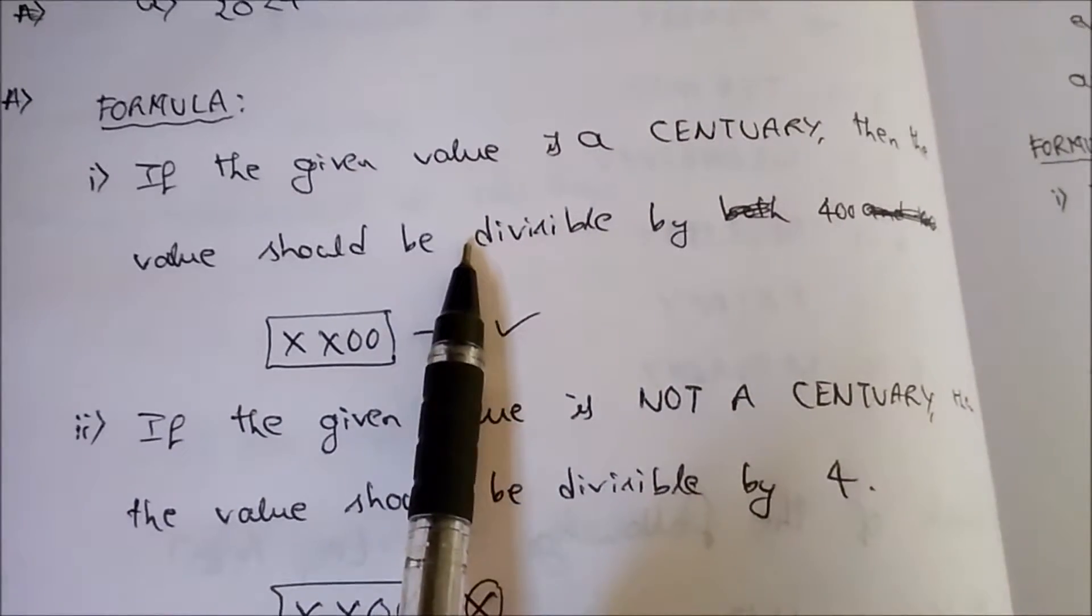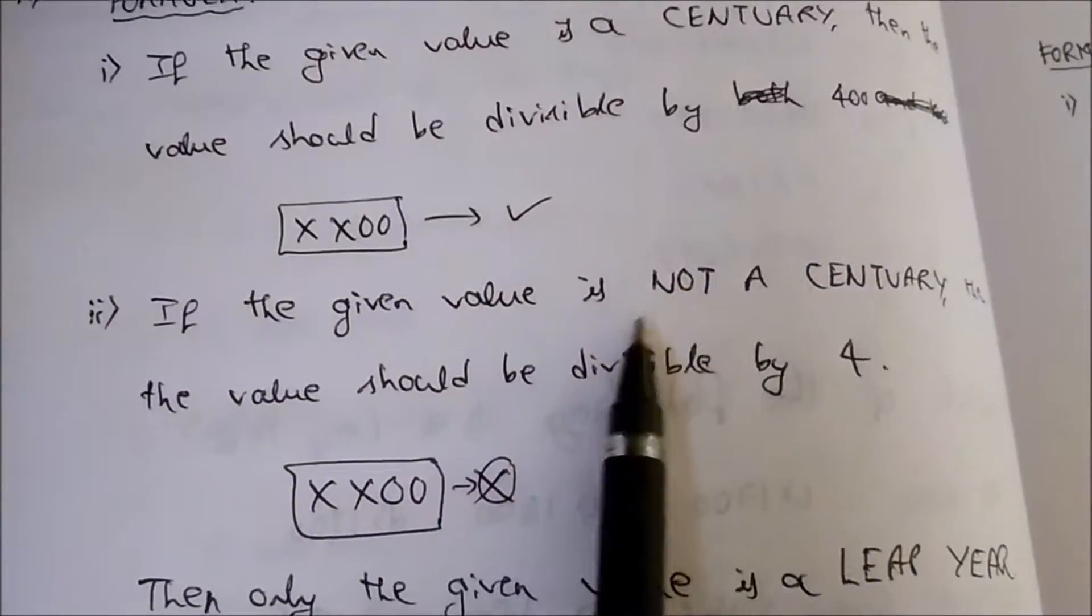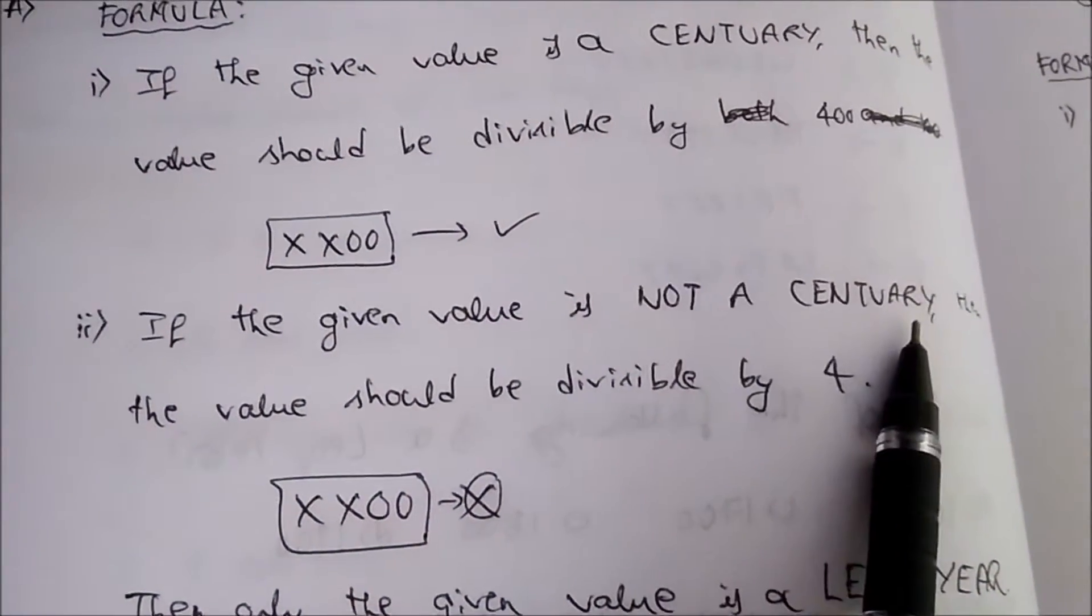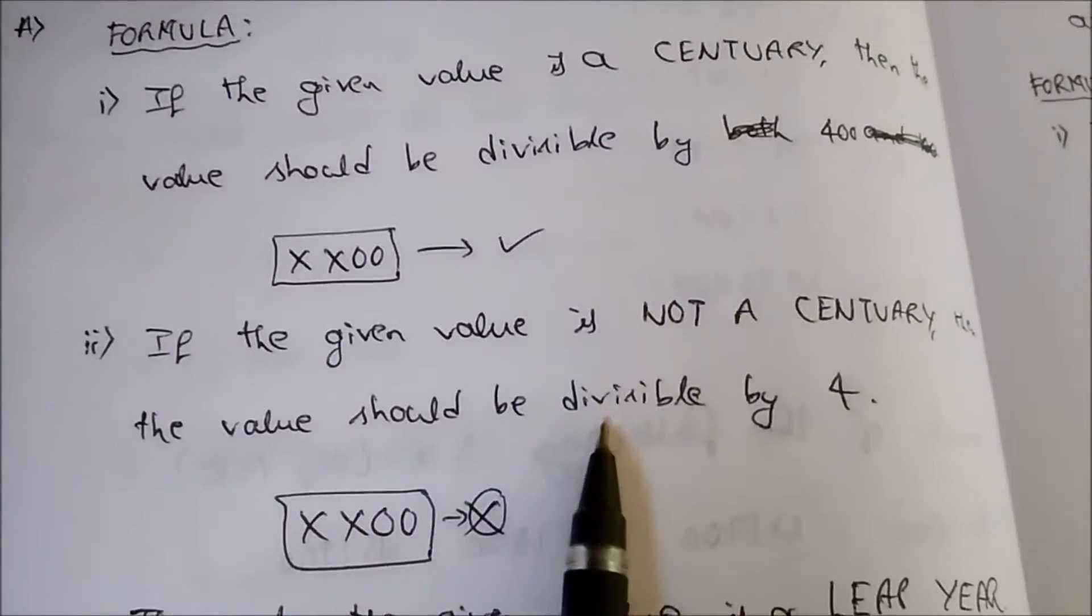Then only it is a leap year. If the last two digits are not zeros, that is if the given value is not a century, then the value should be divisible by four. Then only it is a leap year.